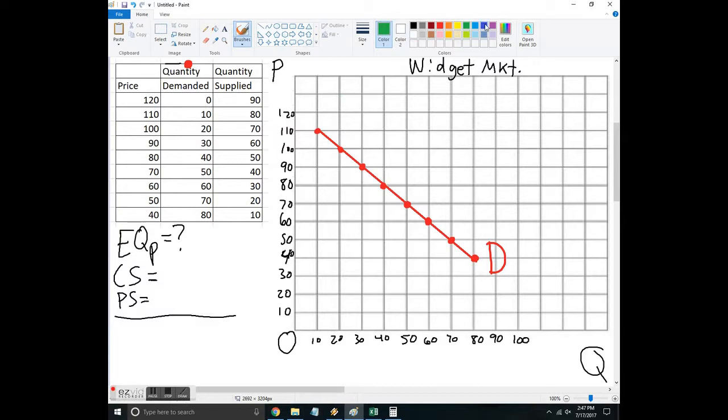We'll label that as the demand. Now let's do supply here. I'll do it in blue. On the supply side, start down here. 40 is 10, 20, also pretty linear here. Now I've got supply and demand, always label everything.